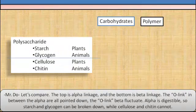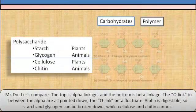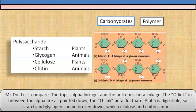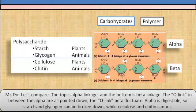Let's compare. The top is alpha linkage and the bottom is beta linkage. The O-link in between the alpha are all pointed down, while the O-link in beta fluctuate. Therefore, alpha is digestible, so starch and glycogen can be broken down, while cellulose and chitin cannot.